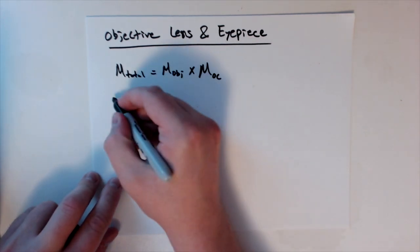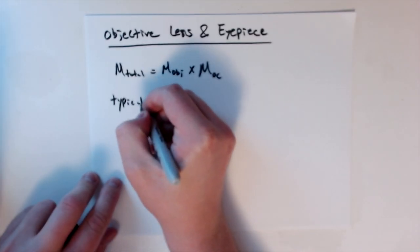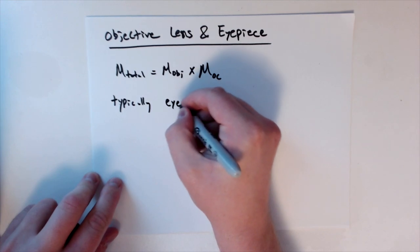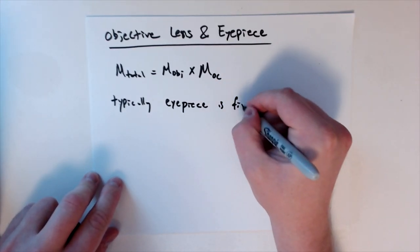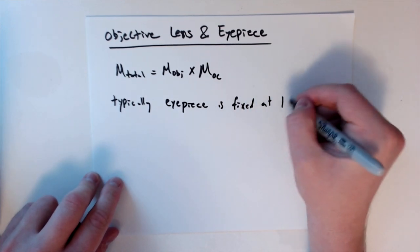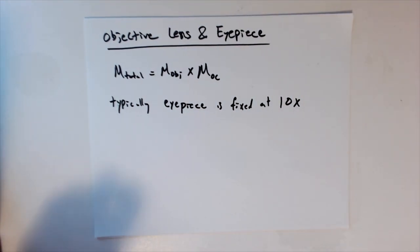So typically, the eyepiece is fixed at 10x magnification. And so really, the objective is what gives us the total magnification and determines resolution. The magnification total is equal to the product of the objective and the ocular, or the eyepiece.